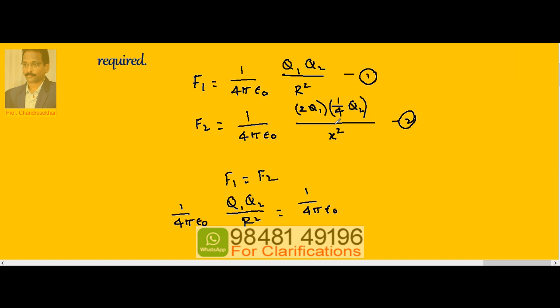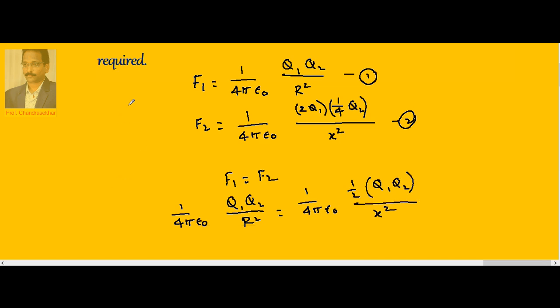Now if I cancel terms on both sides: 1 by 4πε₀, 1 by 4πε₀, q1, q1, q2, q2. Therefore the remaining R squared becomes equal to 2 times x squared.